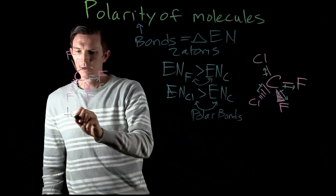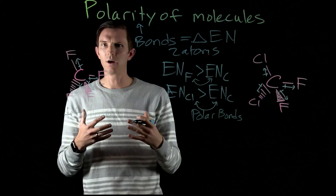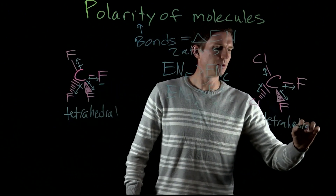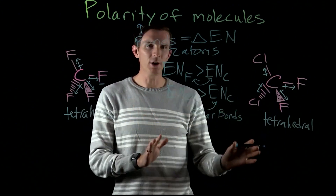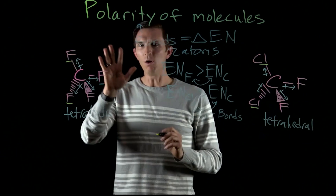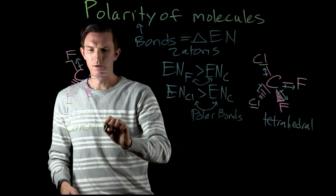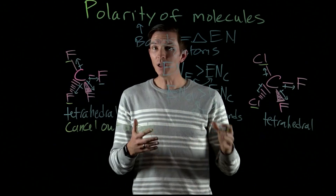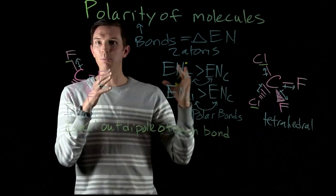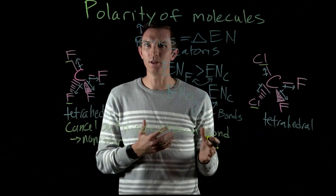CF4 is tetrahedral in shape, which is symmetrical — the bonds are arranged at 109.5-degree angles, each pulling away from the others equally. CCl2F2 is also tetrahedral. For CF4, each of the dipole moment vectors cancels the others out. Because all the dipoles cancel, there is no net pull of electrons in any direction, so this molecule is nonpolar — there is no net dipole moment.